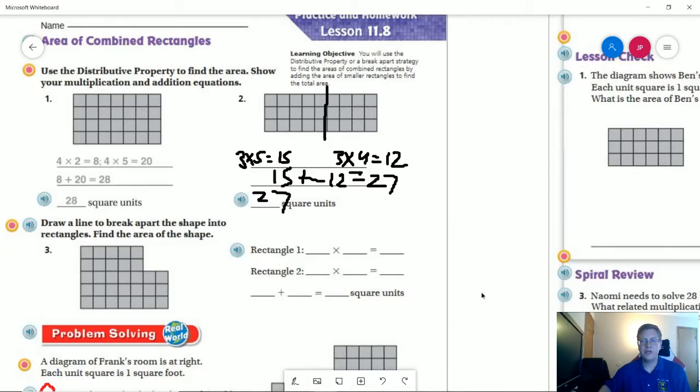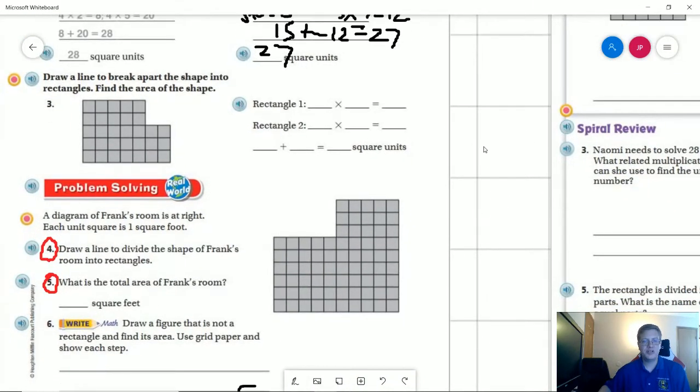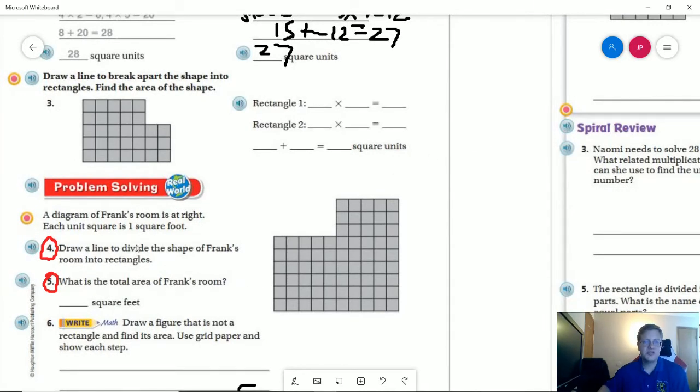So for number four, we want to divide the shape into rectangles. So what I'm going to do is actually make three different rectangles. That way I am working with smaller math facts. And it looks like I'm going to end up with one, two, three, four, five, six times five for this one. So 6 times 5 would give me 30.